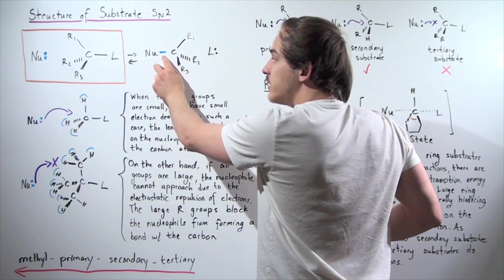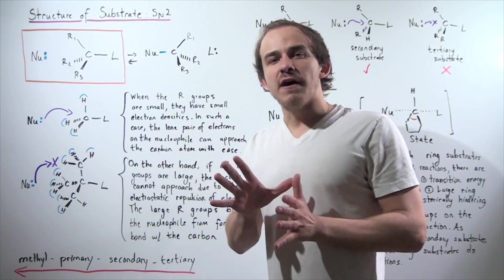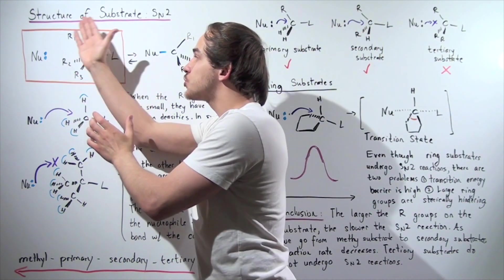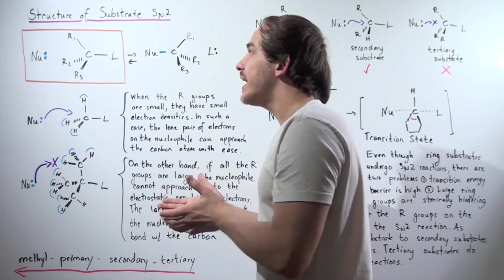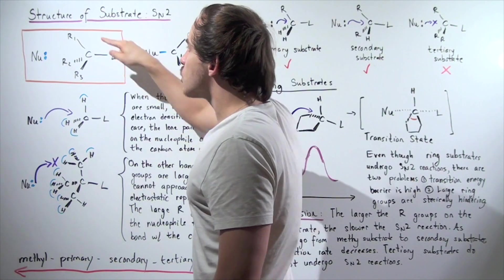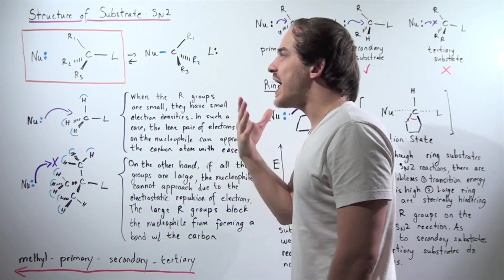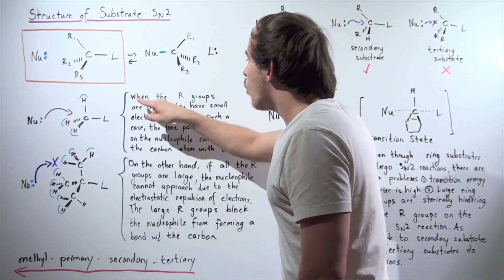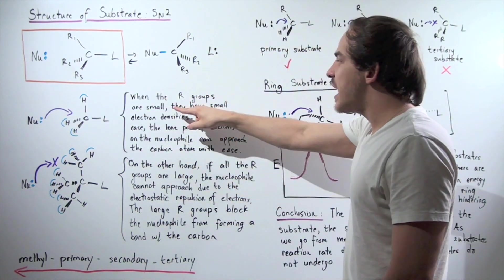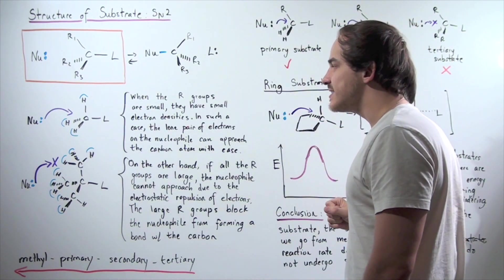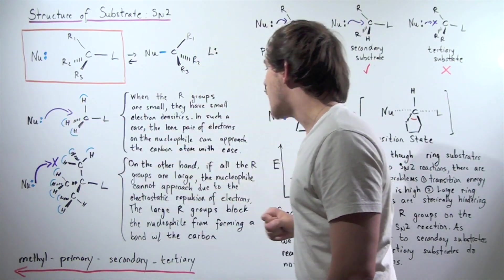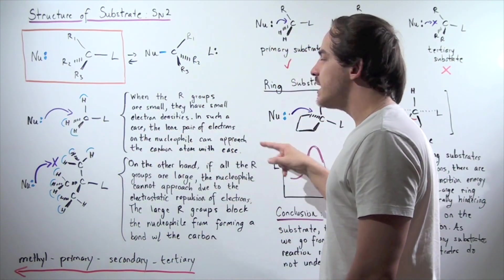Now I want to examine the following question: how does the substrate size and structure affect the rate of our SN2 reaction? To examine that, let's replace all these R groups with H atoms. When the R groups are small, such as when they're H atoms, they have small electron densities. In such a case, the lone pair of electrons on the nucleophile can approach the carbon atom with ease.